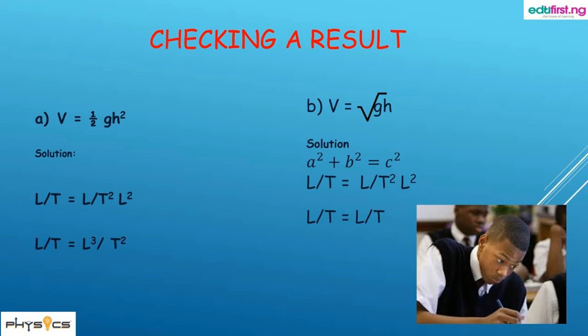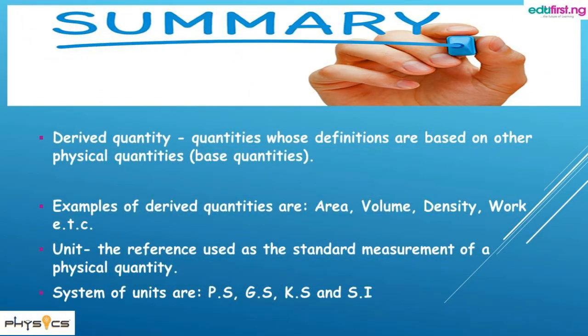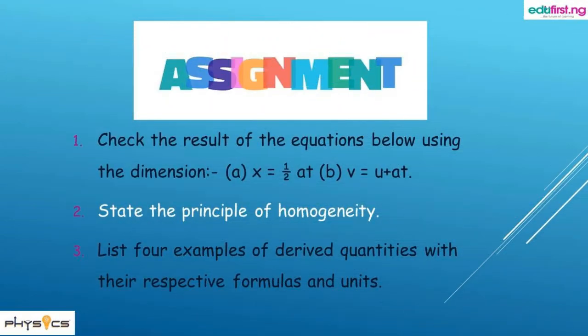That is what the law of dimensional analysis tells us: an equation is dimensionally correct if the dimensions on both sides are equal. We have a summary and an assignment — try to check the equations below using dimensional analysis as demonstrated. Thank you for watching. Don't forget to like and share. Goodbye.